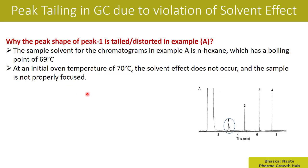Now, why does the solvent effect not occur in this example? The requirement is that the initial column temperature should be 10 to 30 degrees Celsius lower than the boiling point of the solvent. The boiling point is 69 degrees Celsius, so ideally the initial column temperature should have been around 49 to 59 degrees Celsius. In that range the solvent effect could have occurred. But at 70 degrees Celsius it is not going to happen, and that is why you see a lot of peak tailing and distortion of peak one.